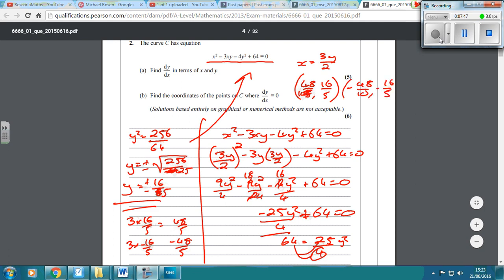Then if we simplify those fractions down, 48 over 10 is going to be 24 over 5. So 24 over 5, 16 over 5. And minus 24 over 5, minus 16 over 5. And that's it for question 2.